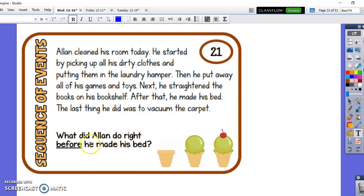The last thing he did was to vacuum the carpet. What did Alan do right before he made his bed? It says right here, after that he made his bed. So we need to identify, what did he do before that? Before he made his bed, he straightened the books on his bookshelf.